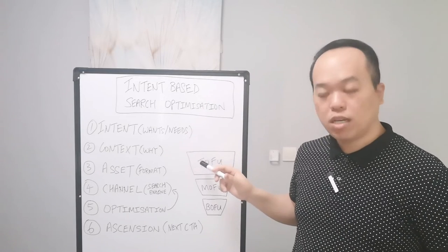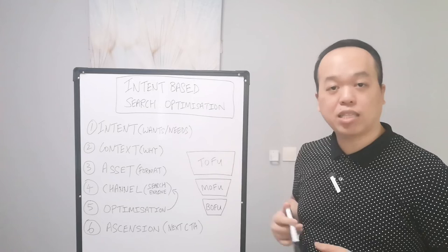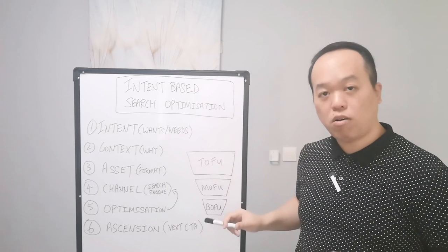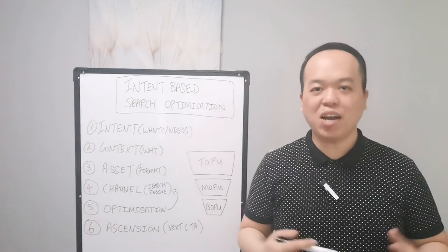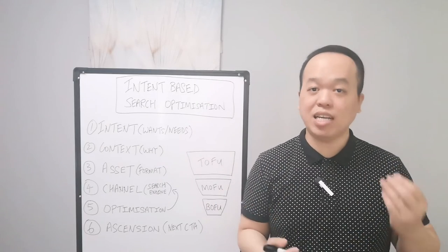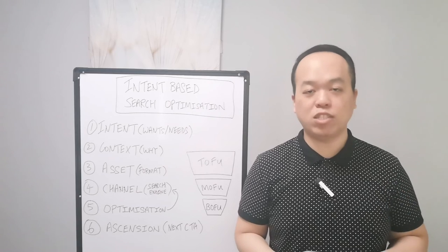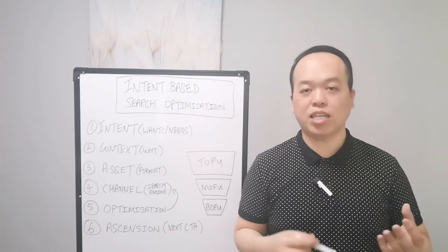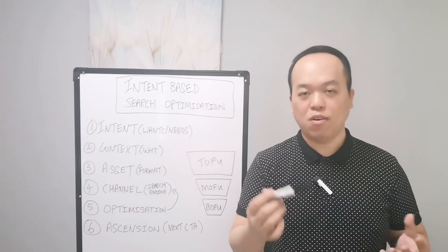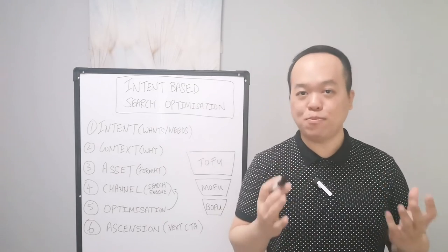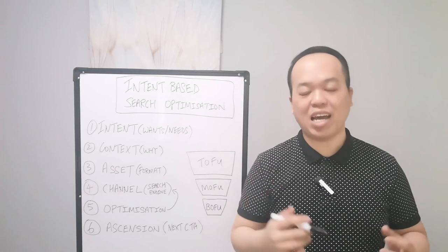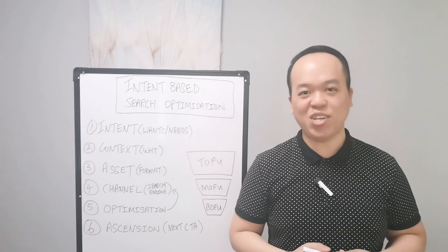To have a successful search engine marketing campaign, you need to know these six categories and align them to the appropriate level of the marketing funnel — whether that's the awareness, consideration, or conversion stage. I hope you have a better understanding of Intent-Based Search Optimization and can successfully launch an SEM campaign to attract potential prospects to your business. That's all for now, and I hope to see you in the next video.